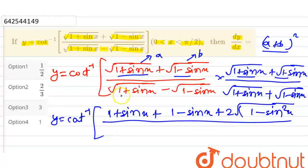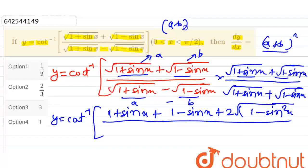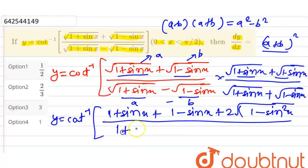In the denominator, we have (a-b)(a+b), which equals a²-b². That is (1+sinx) minus (1-sinx).